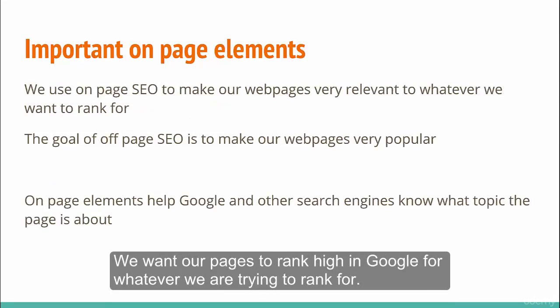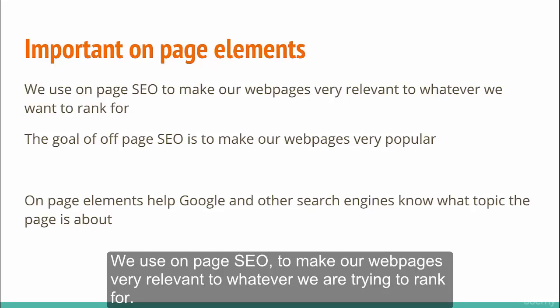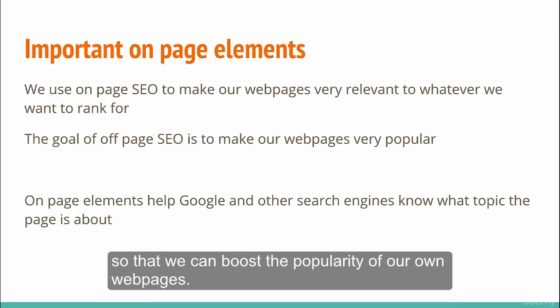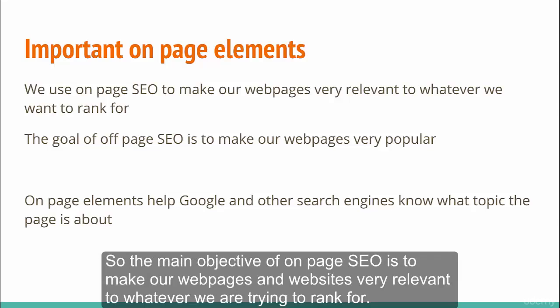We want our pages to rank high in Google for whatever we are trying to rank for. We use on-page SEO to make our web pages very relevant to whatever we are trying to rank for. And with off-page SEO, we are trying to build high quality links from other popular and relevant web pages so that we can boost the popularity of our own web pages. So the main objective of on-page SEO is to make our web pages and websites very relevant to whatever we are trying to rank for.